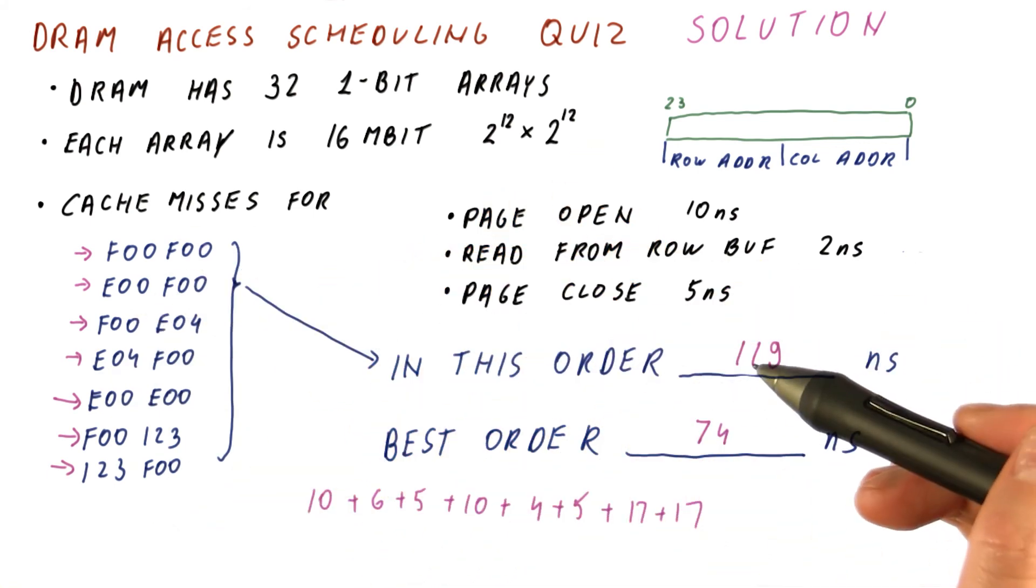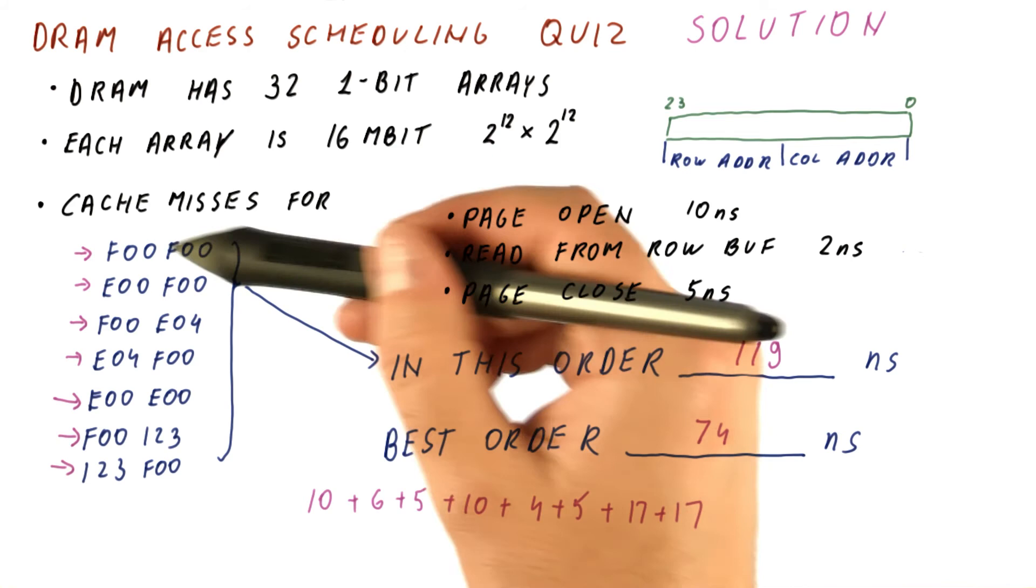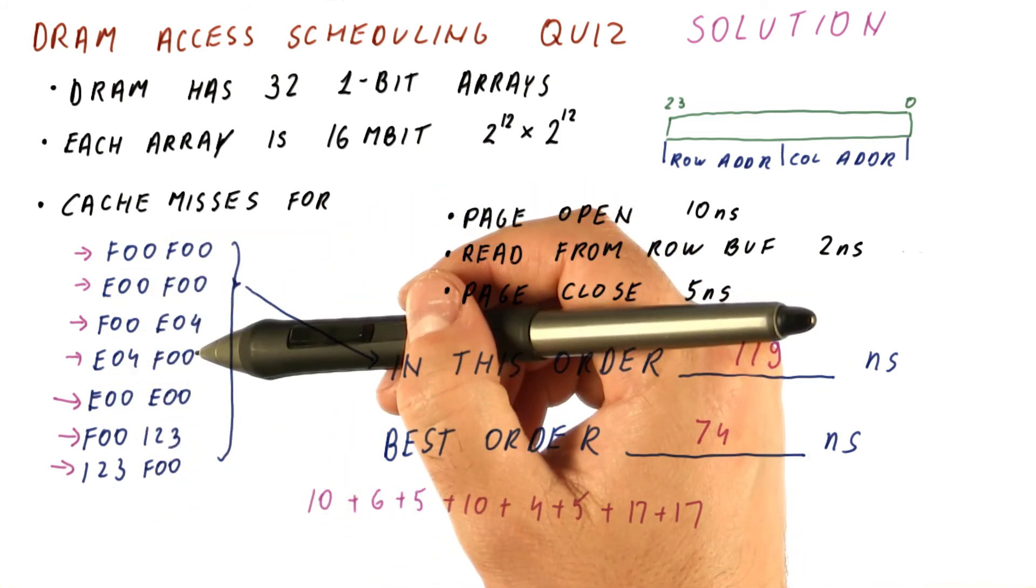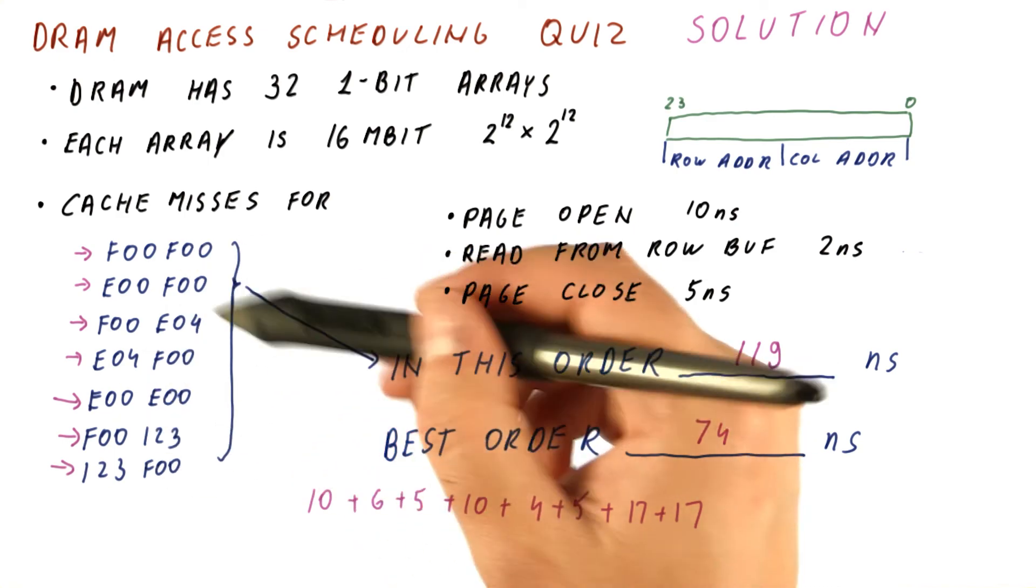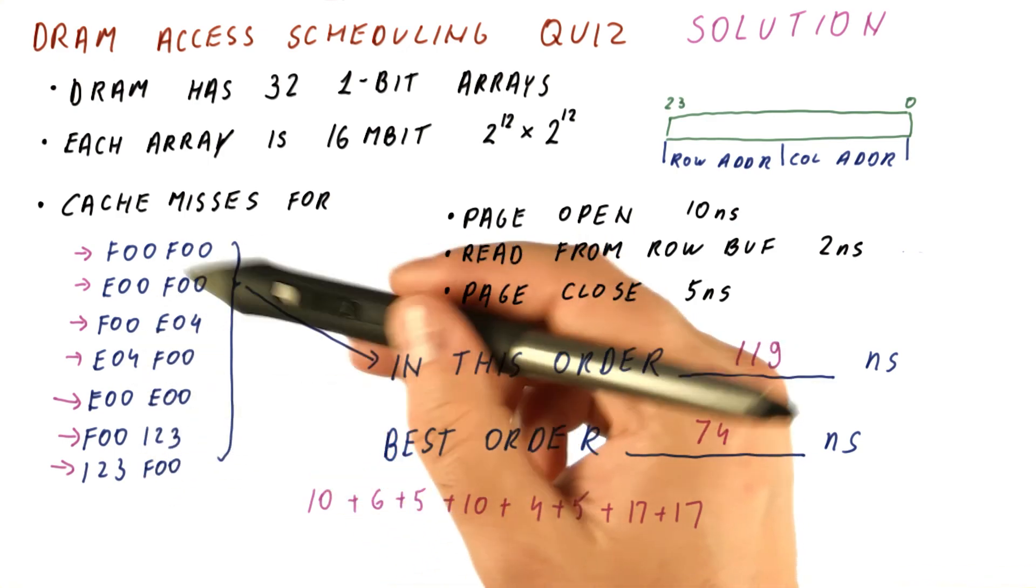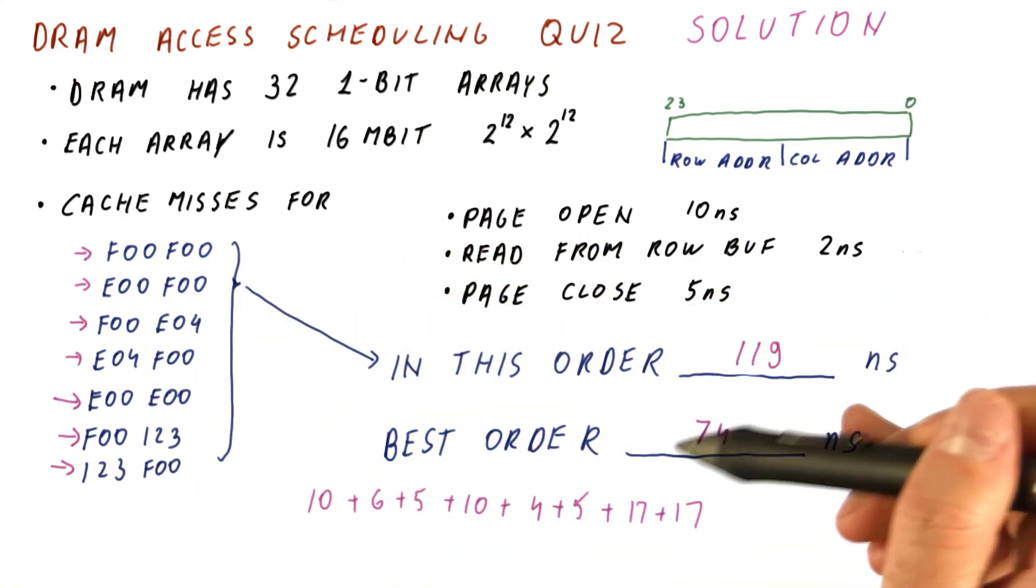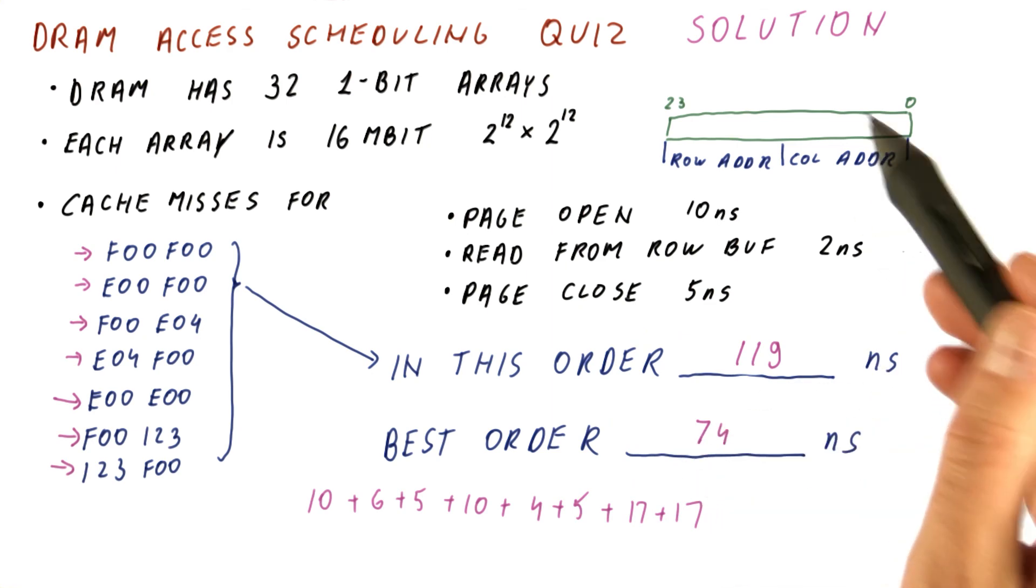So as you can see, when caches have a number of pending misses and we need to send these misses to memory, it pays to rearrange the order of the addresses we are accessing to benefit from the organization of the DRAM.